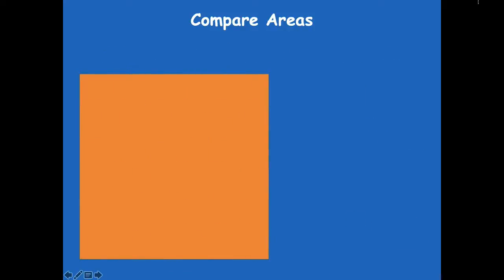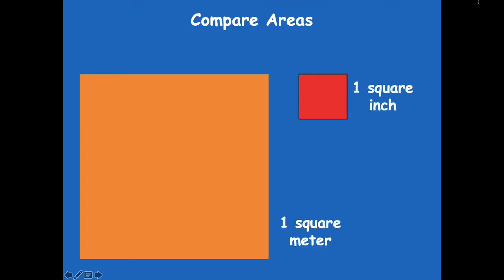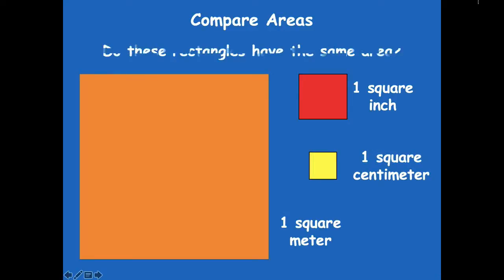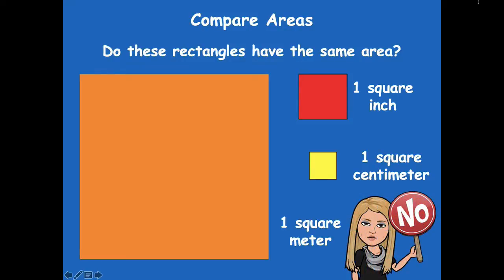Let's check this out. For this, I would say this is one square meter — we're stepping it up and using even larger units than centimeters and inches. Now, my screen isn't big enough to show you a square meter, so I had to make a square as large as I could to fit on the screen. But a square meter is about the size of a guitar — from the top to the very bottom, that's about a square meter. And here we have our square inch and one square centimeter. Do these rectangles have the same area? No, they sure don't.